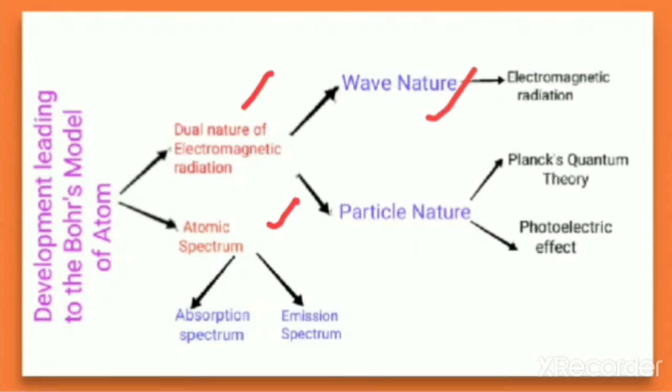Dual nature of electromagnetic radiation means two natures — electromagnetic radiation has wave nature as well as particle nature. In the wave nature, we discuss electromagnetic radiation, its frequency, wavelength, and properties. In the particle nature, we discuss Planck's quantum theory and the photoelectric effect.